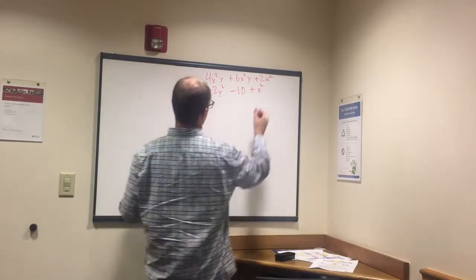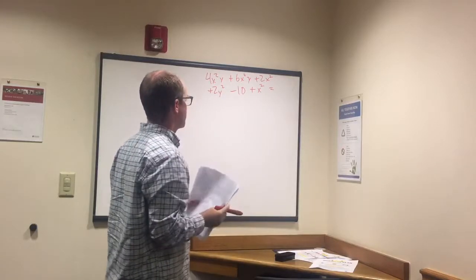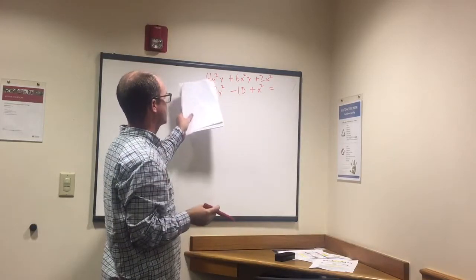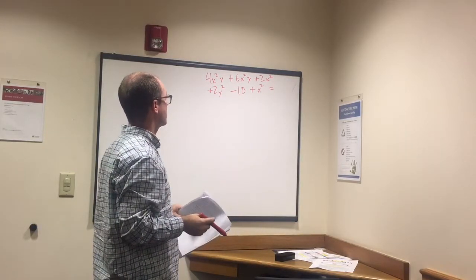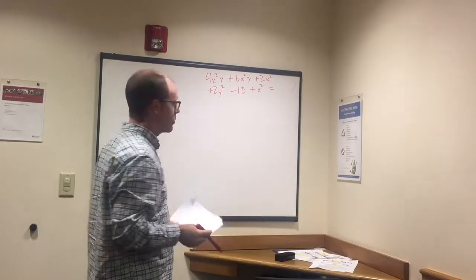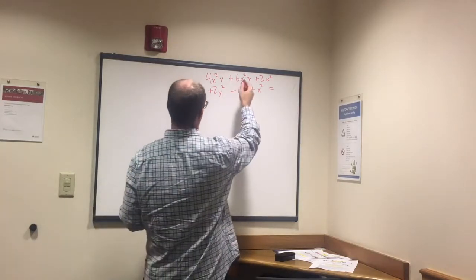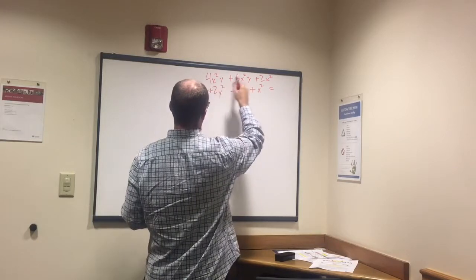We do the same thing, we're trying to combine like terms. We start off with 4x squared y and the very next one is plus 6x squared y so we can combine these.